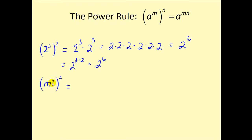Looking at our second example, we have m to the fifth power raised to the fourth power. The shortcut would be to raise m to the five times four power, or multiply our exponents, which gives us m to the twentieth power.